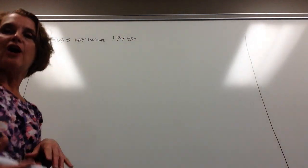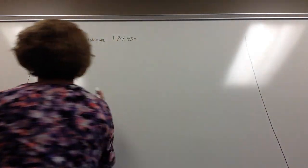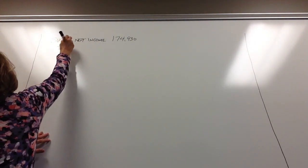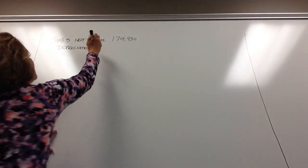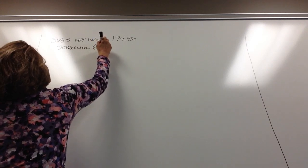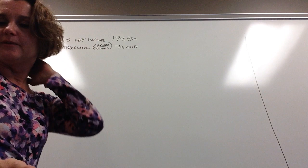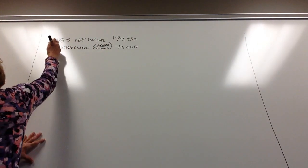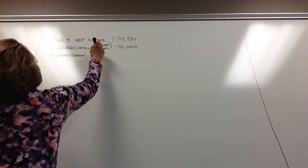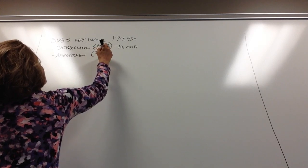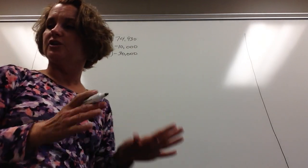Now we adjust for the acquisition accounting premium. We have extra depreciation on the building: $200,000 over 20 years equals $10,000 of additional depreciation per year. We also amortize the patent: $300,000 over 10 years equals $30,000 per year. So we subtract $10,000 depreciation and $30,000 amortization — these deal with our acquisition accounting premium assets.